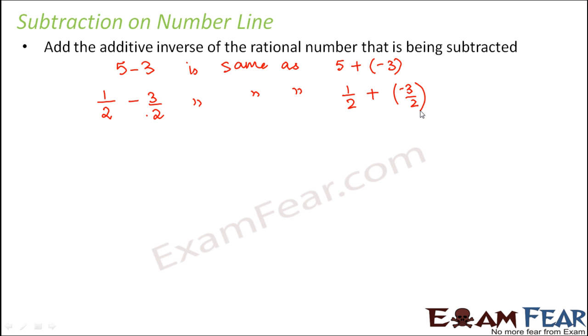So subtracting a number is the same as adding its additive inverse. Let us do subtraction. Let us look at the first example: 1 by 2 minus 3 by 2. This is nothing but 1 by 2 plus the additive inverse of 3 by 2, which is minus 3 by 2.